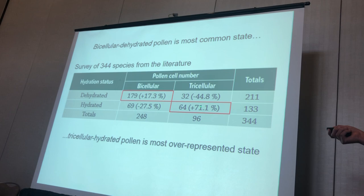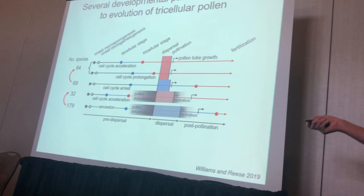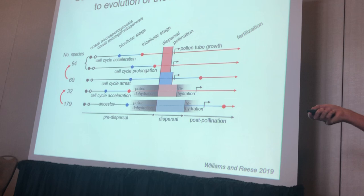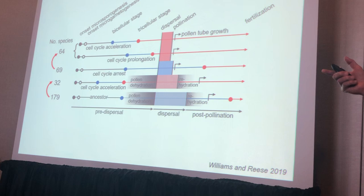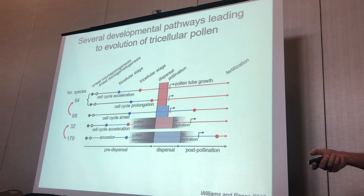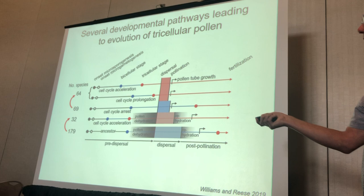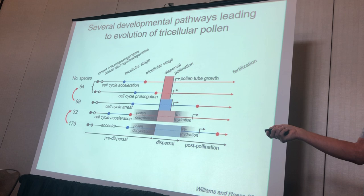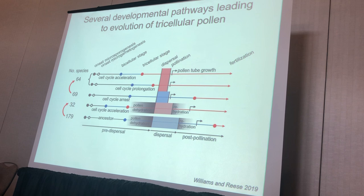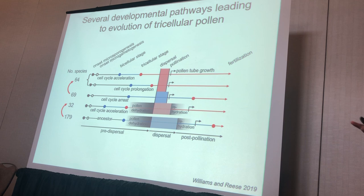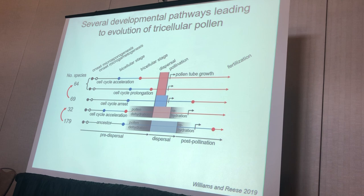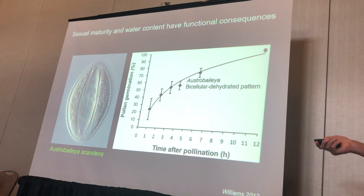The ancestral pattern is bicellular and dehydrated, and there are lots of different developmental mechanisms for evolving tricellular pollen — it's a more or less irreversible state once you get there. One way is to keep pollen dehydration but accelerate the cell cycle to reach the tricellular stage before dehydration occurs. Another way is a two-step process: first you lose pollen dehydration, and once you disperse pollen in a hydrated state you're metabolically active, so your cell cycle is running and you can reach the tricellular state before pollen dispersal. That's probably the most common route to tricellular pollen.